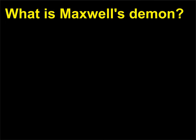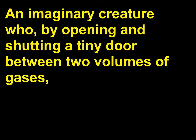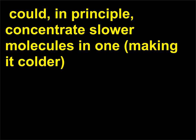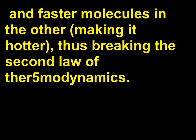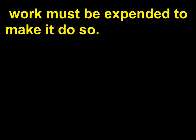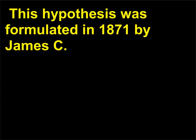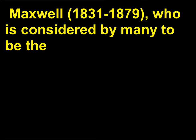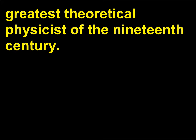What is Maxwell's demon? Maxwell's demon is an imaginary creature who, by opening and shutting a tiny door between two volumes of gases, could in principle concentrate slower molecules in one volume (making it colder) and faster molecules in the other (making it hotter), thus appearing to break the second law of thermodynamics. Essentially this law states that heat does not naturally flow from a colder body to a hotter body; work must be expended to make it do so. This hypothesis was formulated in 1871 by James C. Maxwell (1831–1879), who is considered by many to be the greatest theoretical physicist of the 19th century.